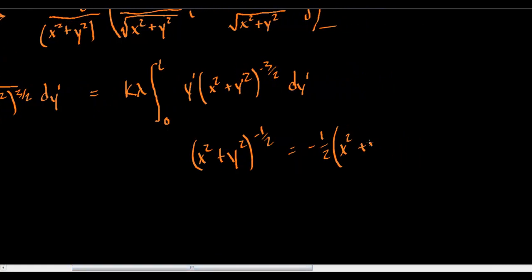x squared plus y squared to the negative 3 halves times the derivative of this. x is a constant in this equation, so that goes to 0 and then we get 2y. The 2's cancel, and so I get negative y times x squared plus y squared to the negative 3 halves. So if I just make this negative, then I've got my answer.